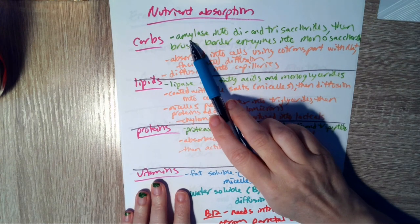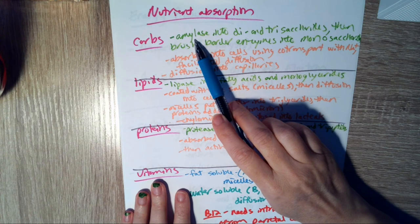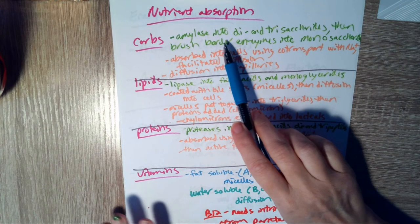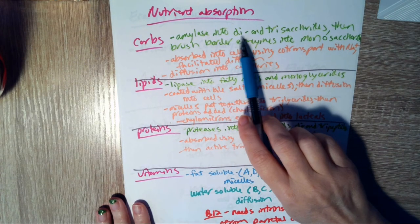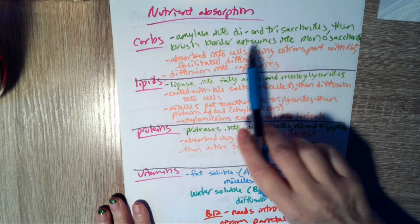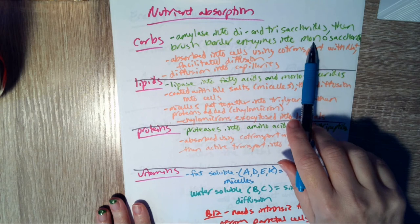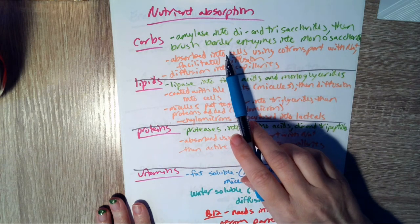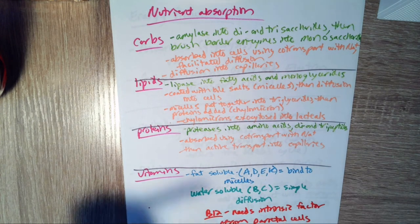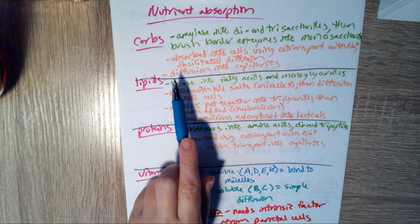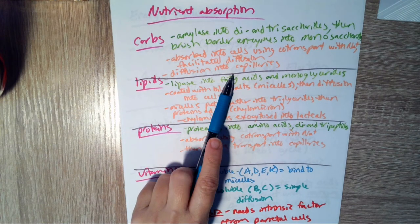So with the carbohydrates, our salivary amylase and our pancreatic amylase break the carbohydrates into the di- and the trisaccharides. Then we finish the job with the brush border enzymes, which break them into the monosaccharides. The monosaccharides absorb into the cell using co-transport with sodium. And then they're diffused into the capillaries.